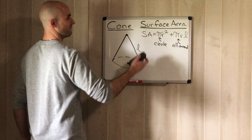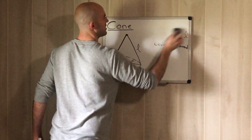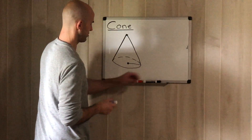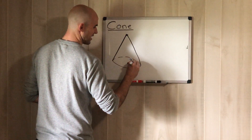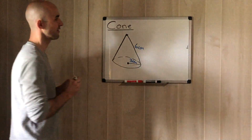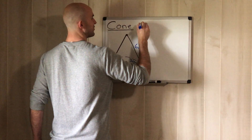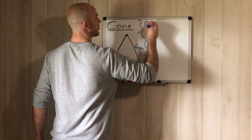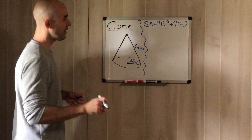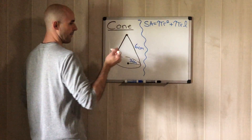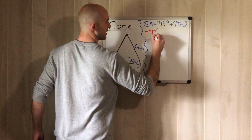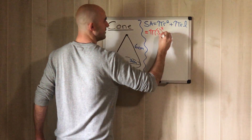Let's apply the formula. We have a cone — let's say the radius is 3 centimeters and the length of the cone is 6 centimeters. To find the surface area of this cone, we use the formula: Surface Area = πr² + πrl. Now we just substitute everything we know step by step.